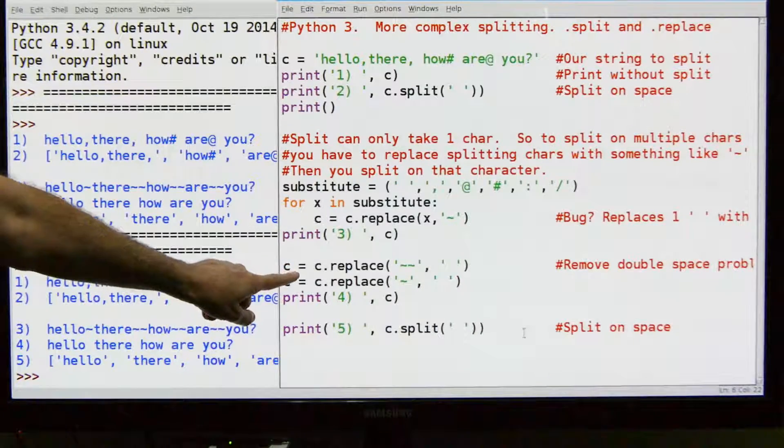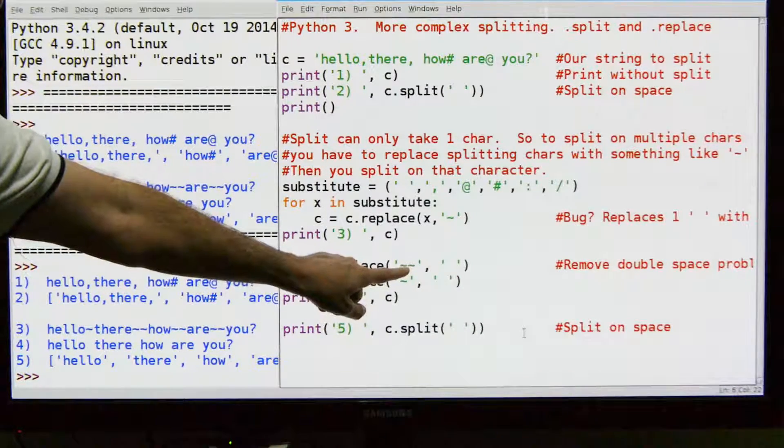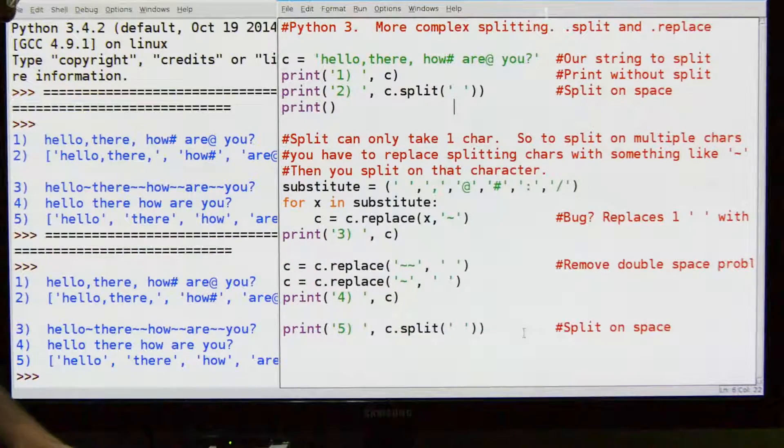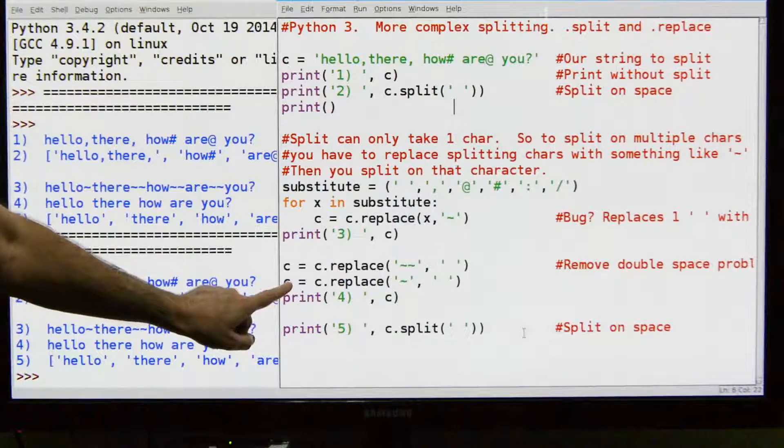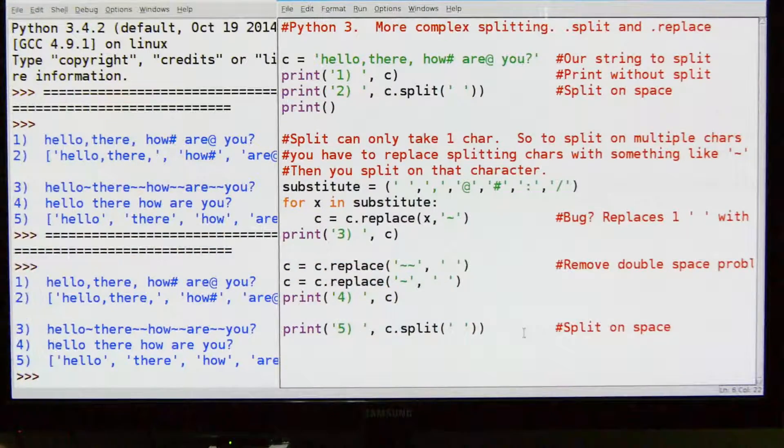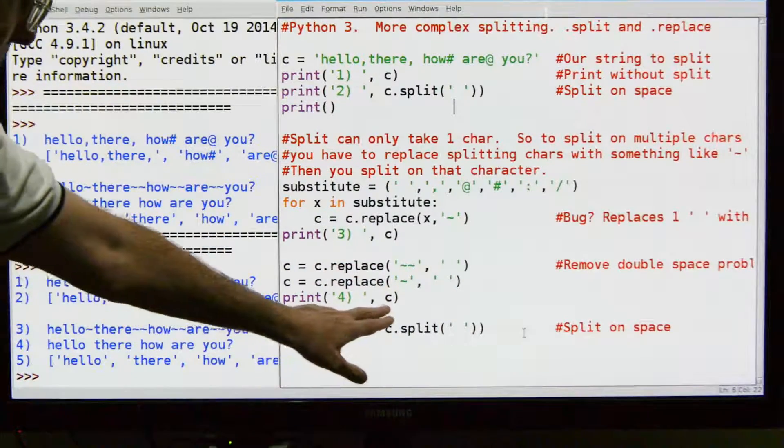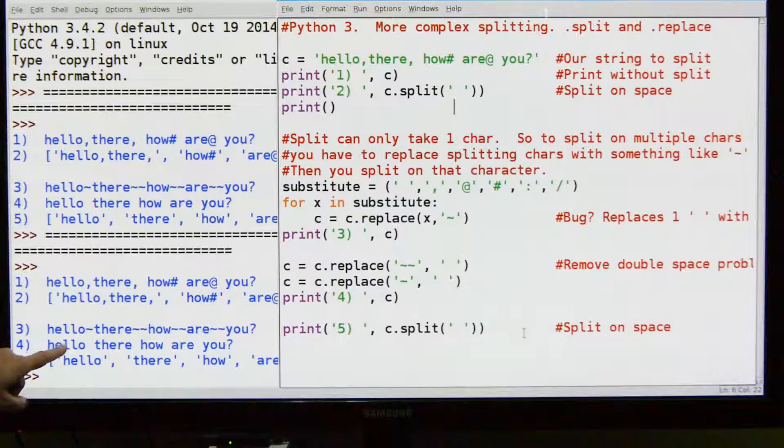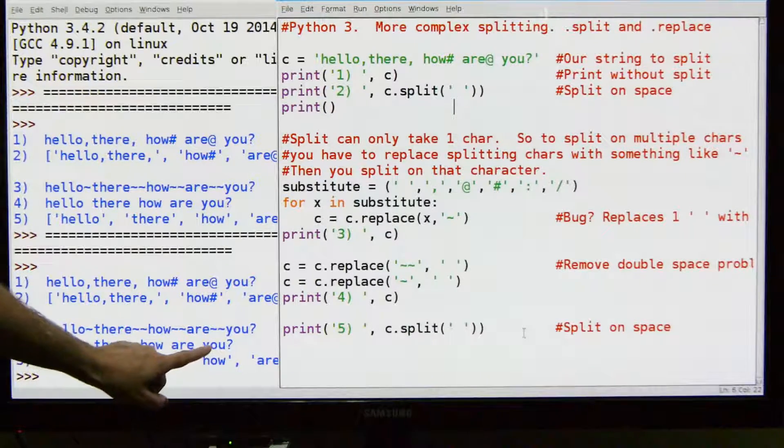Now to clean this up what I'm going to do is I'm going to do a replace. I'm going to do the replace the two tildes with the single space. And then as soon as I do that I'm going to take the same string and I'm going to replace single tildes with one space. And then I'll print that as number four. And you can see that this is pretty much how we would like it to look.